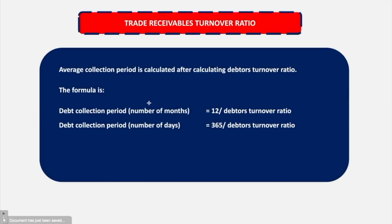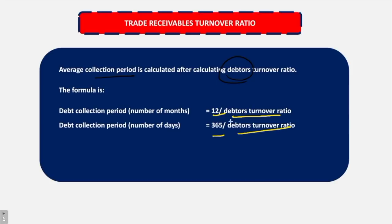In trade receivable turnover ratio, we also calculate something called the collection period — how much time it will take to collect the money that another person owes you. Average collection period is calculated using the debtors turnover ratio. The formula is 12 divided by debtors turnover ratio, or 365 divided by debtors turnover ratio, depending on whether we want the collection period in months or in days.